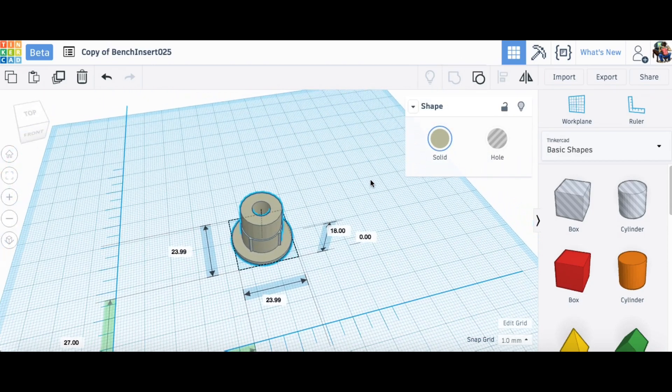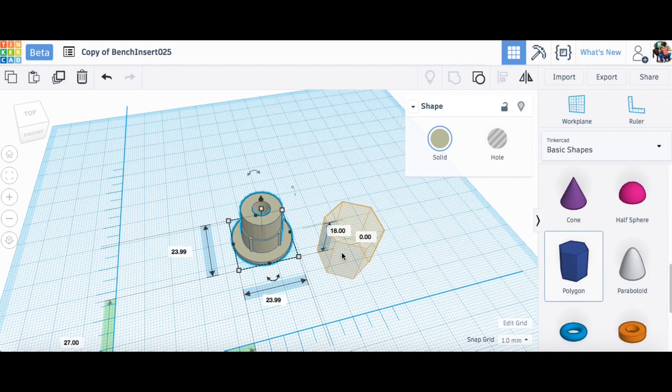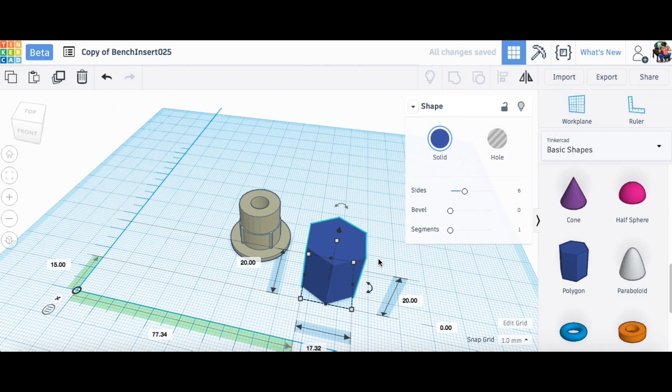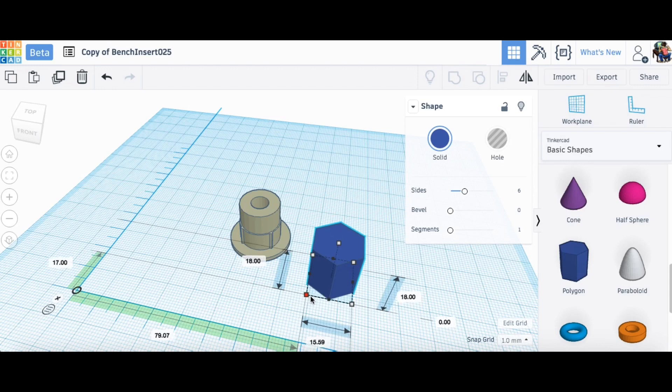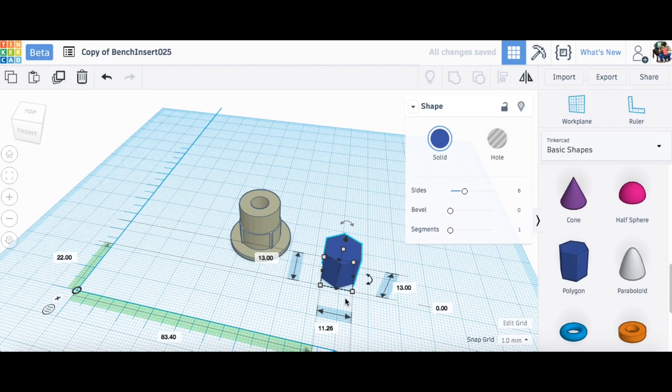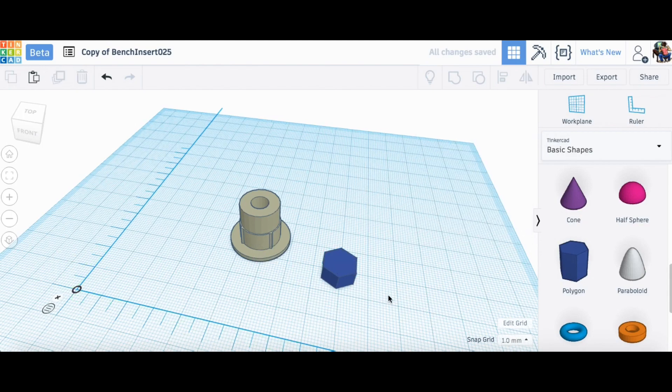So now I needed to bring in the hex nut. So I grabbed a polygon which is a six-sided object in Tinkercad, at least that's what it defaults to. You can change it. And I measured the nut. It's a quarter inch 20 threads per inch nut. So I sized it and I made this hexagon just slightly bigger than that nut.